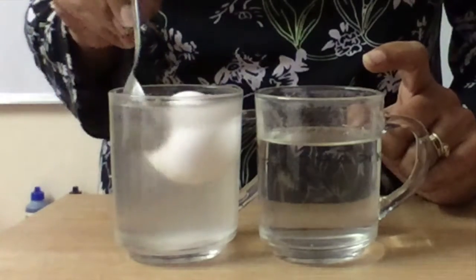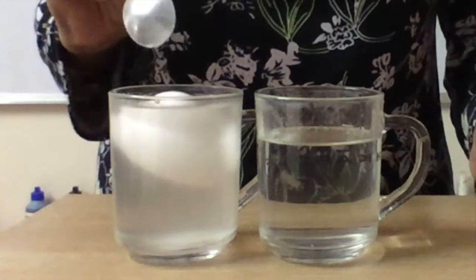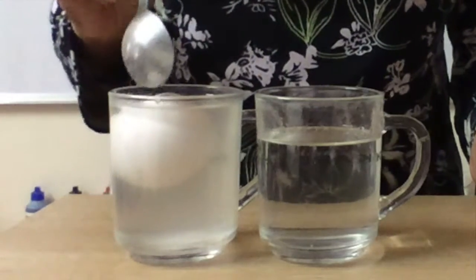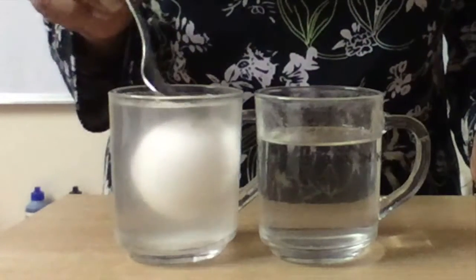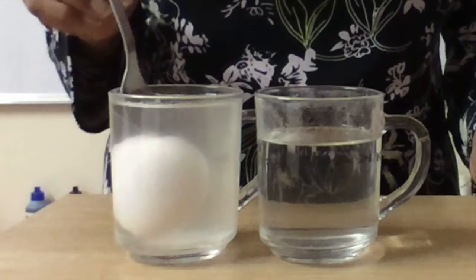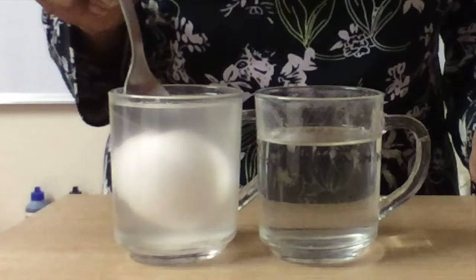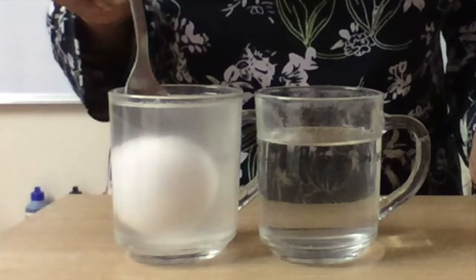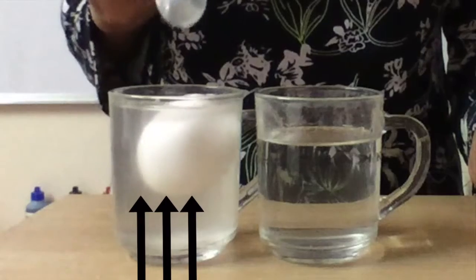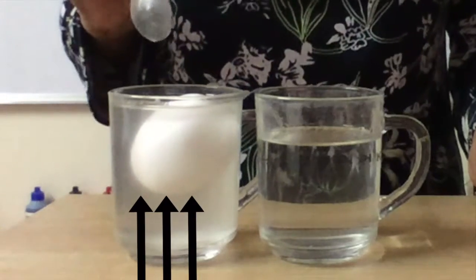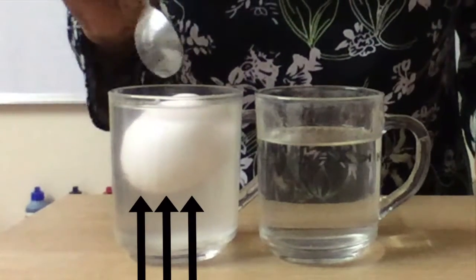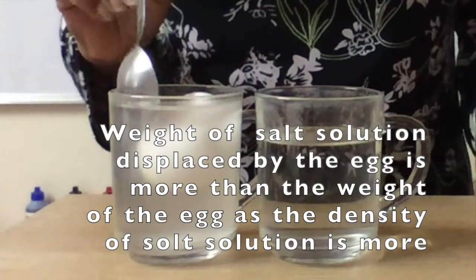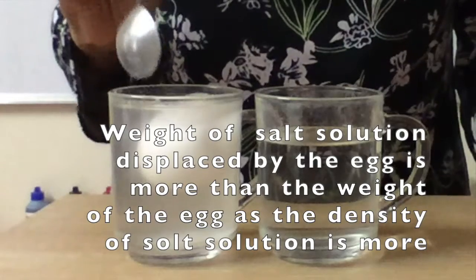Now when we place it in the salt solution you will see that the volume of the egg remaining the same. When I immerse it completely it will have the volume of the liquid displaced being exactly the same as the volume of the egg. And now if I release it you will see that egg comes up. Why? Because the weight of the liquid that is displaced in this container, because its density is more, its weight was more.